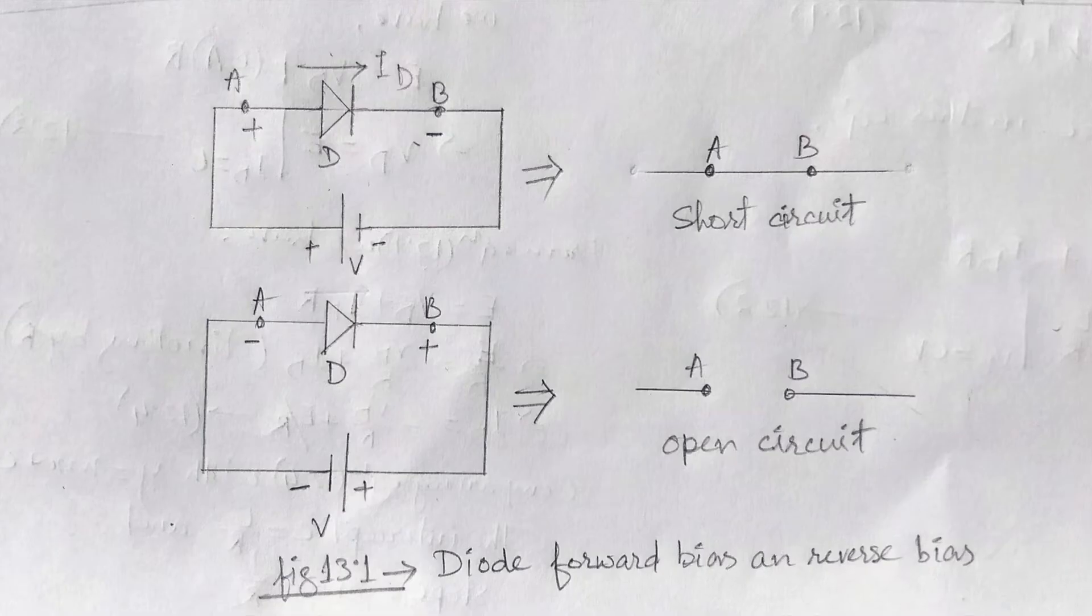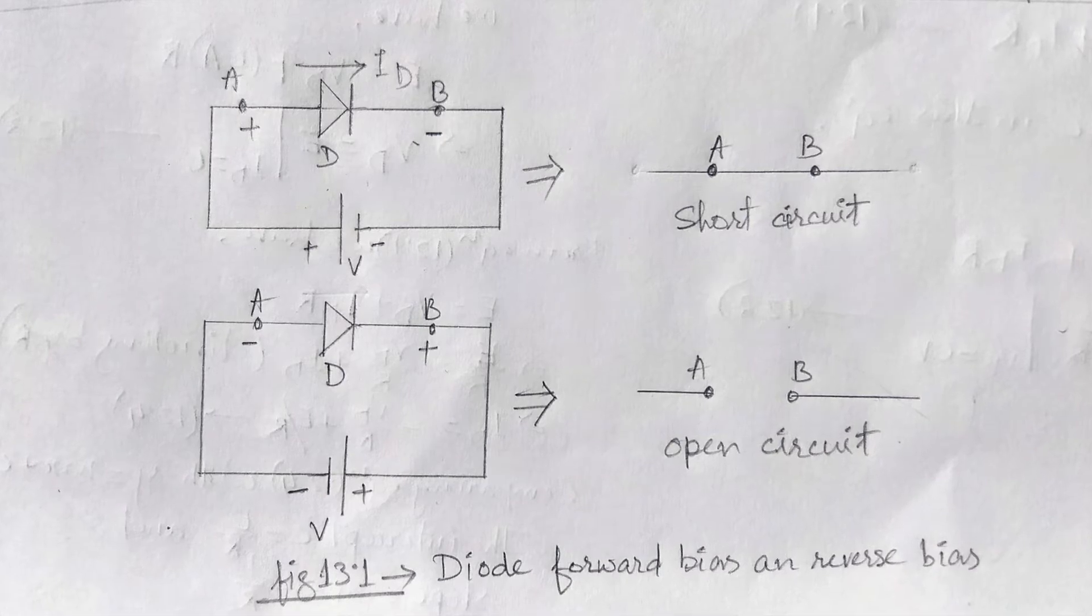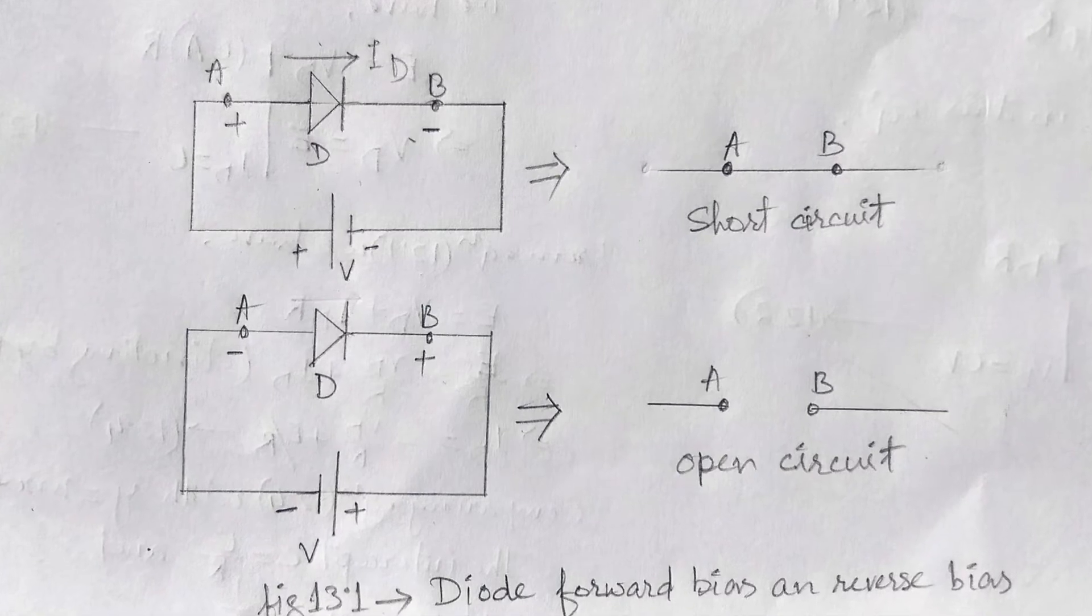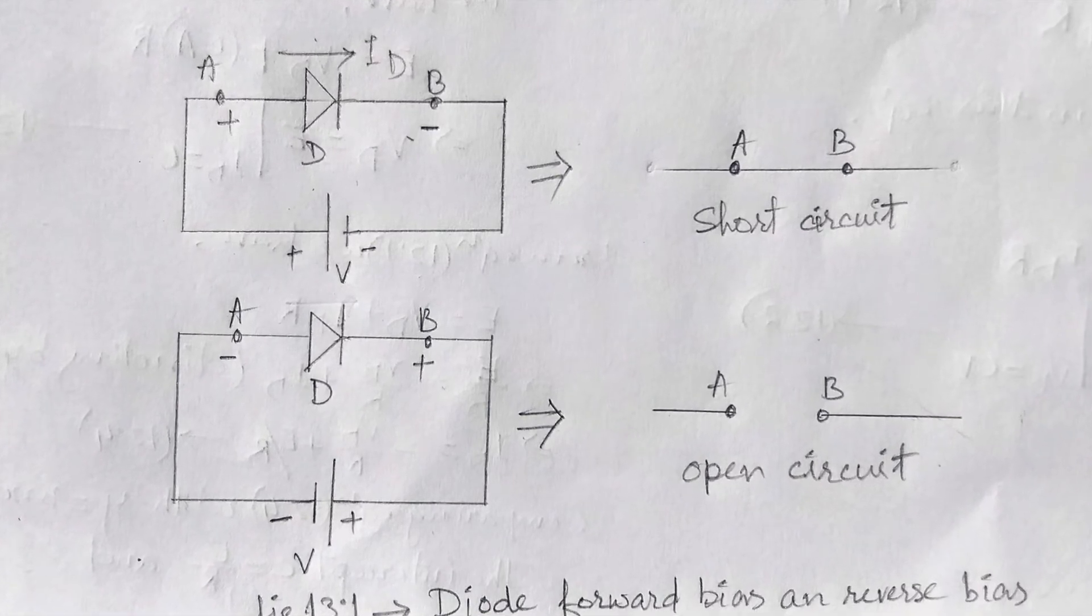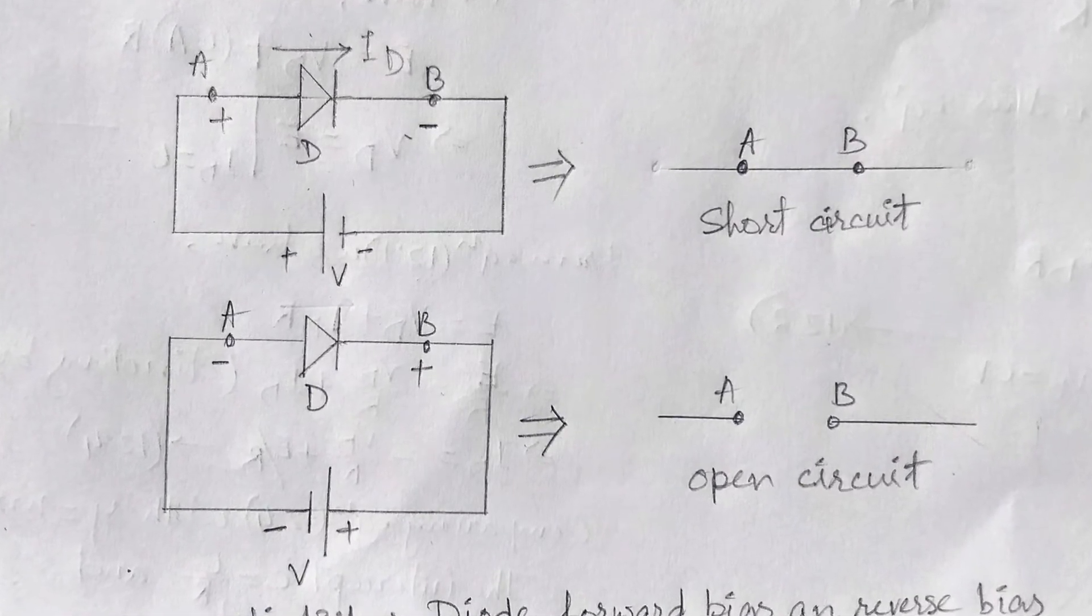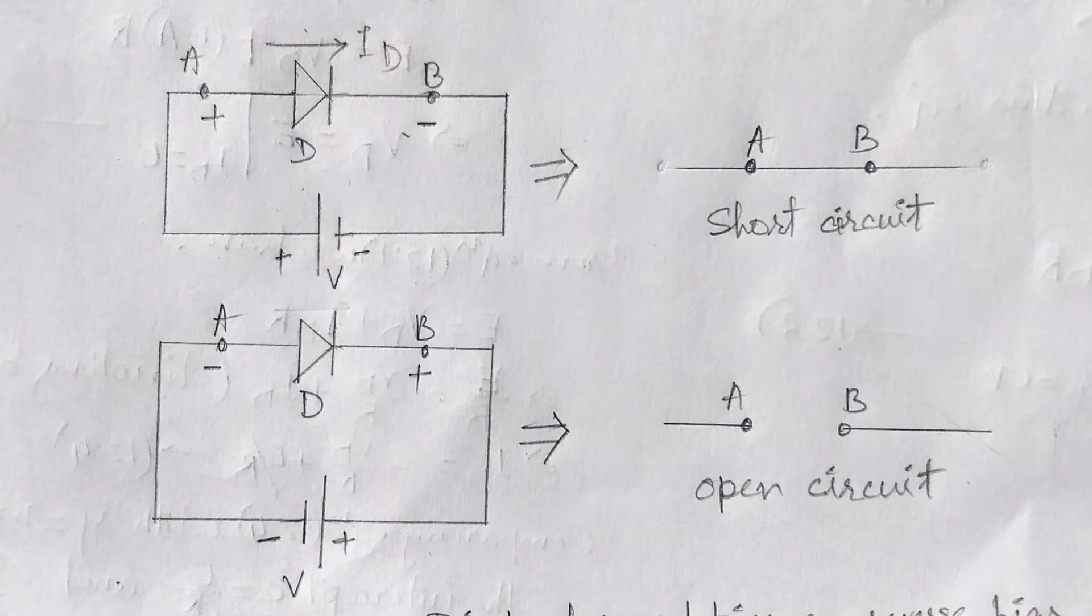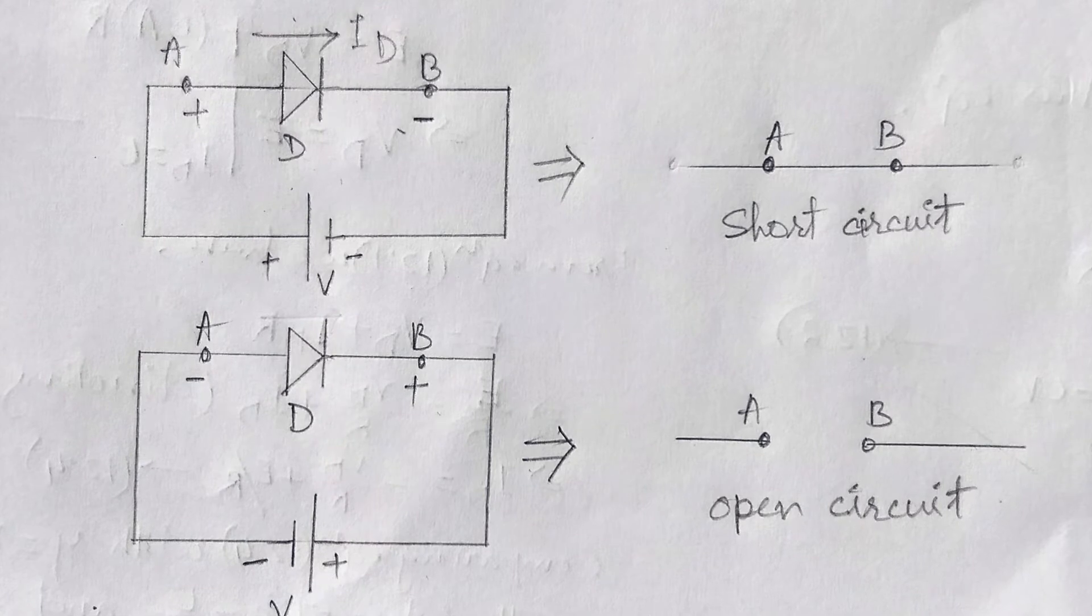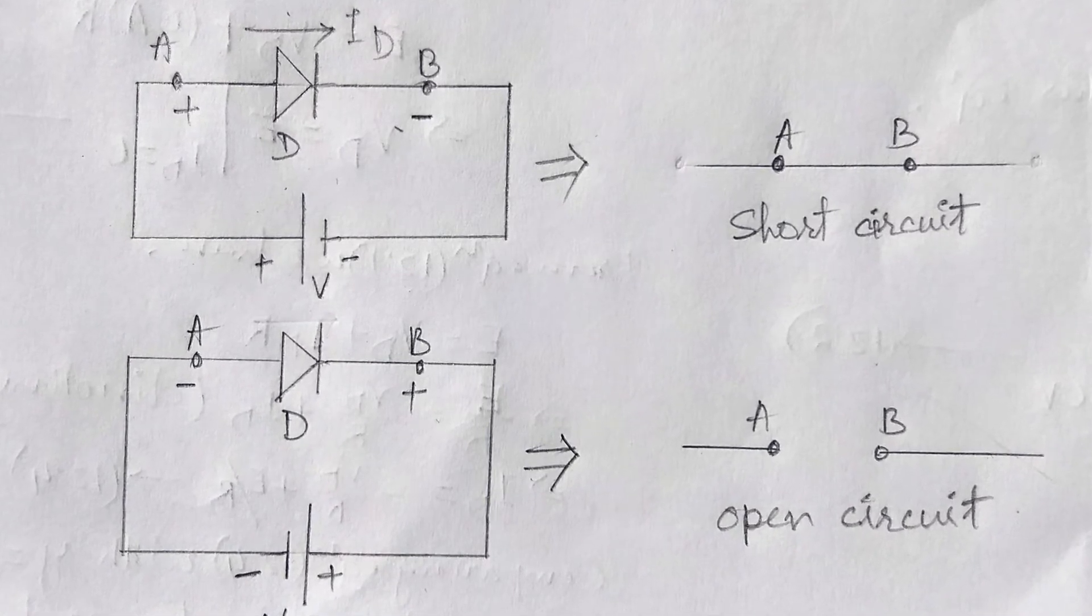In the previous tutorials, we have learned that a semiconductor diode conducts in forward bias condition and acts as a short circuit, but negligible or no current flows in reverse bias condition, or works as an open circuit. This simple logic is used to design a half-wave and full-wave rectifier.